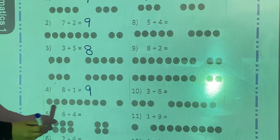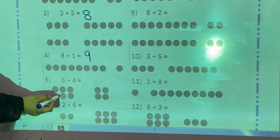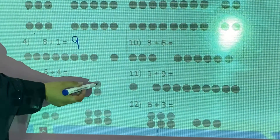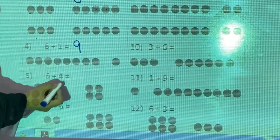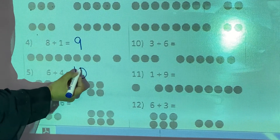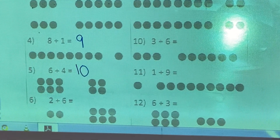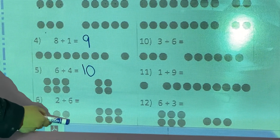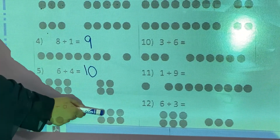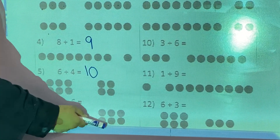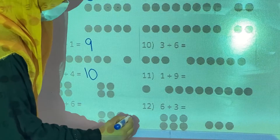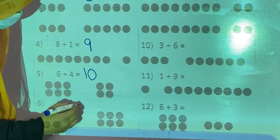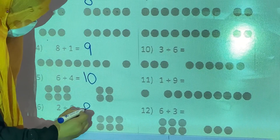Now 6 plus 4. Count: 1, 2, 3, 4, 5, 6, 7, 8, 9, 10. So 6 plus 4 is equal to 10. Now 2 plus 6. Count: 1, 2, 3, 4, 5, 6, 7, 8. So 2 plus 6 is equal to 8.